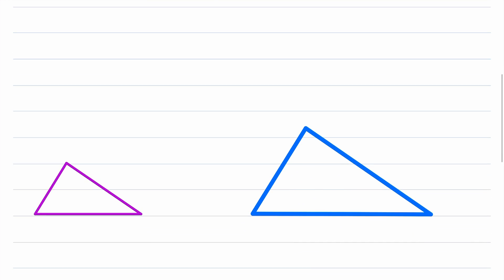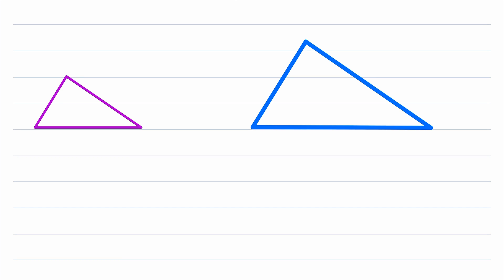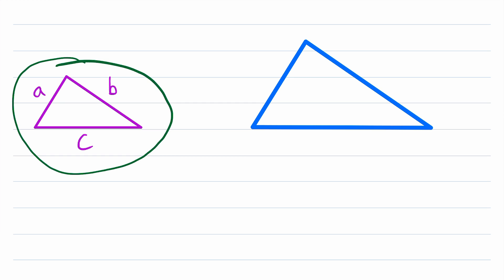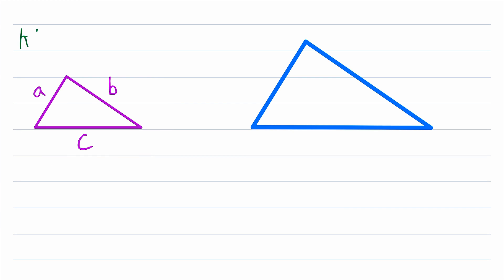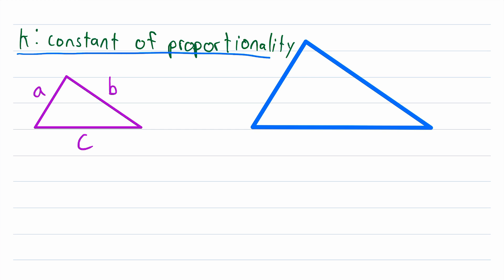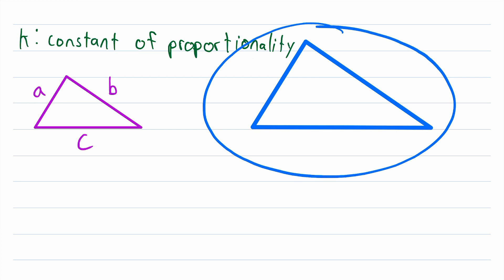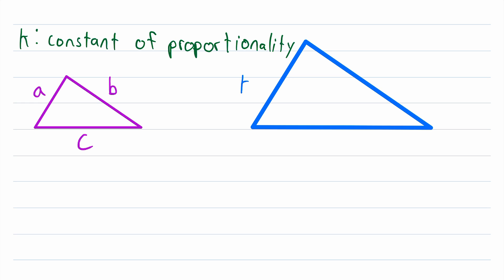When two triangles are similar, their corresponding sides are proportional. In today's video, we'll be focusing specifically on that property — what it means for the sides of two triangles to be proportional. Let's say that the side lengths of this purple triangle are A, B, and C. Then, if the sides of this triangle are proportional to the corresponding sides of this triangle, that means there exists some number K called the constant of proportionality, and the side lengths of this triangle are equal to K times the corresponding side length of the purple triangle.